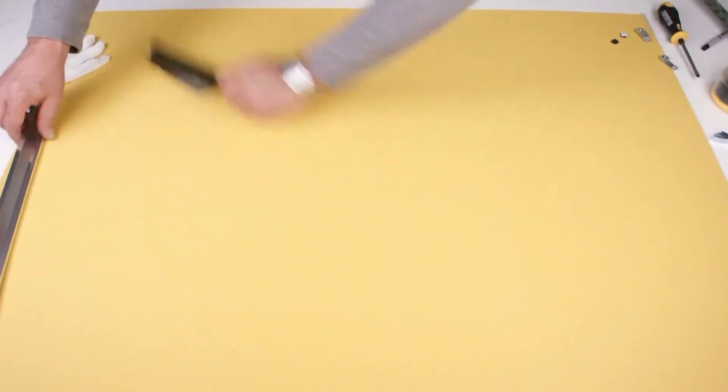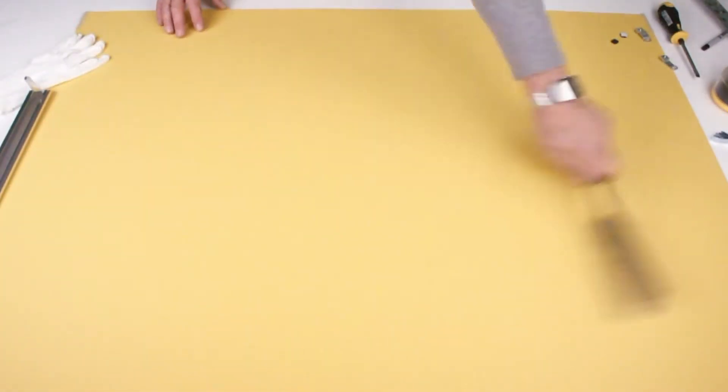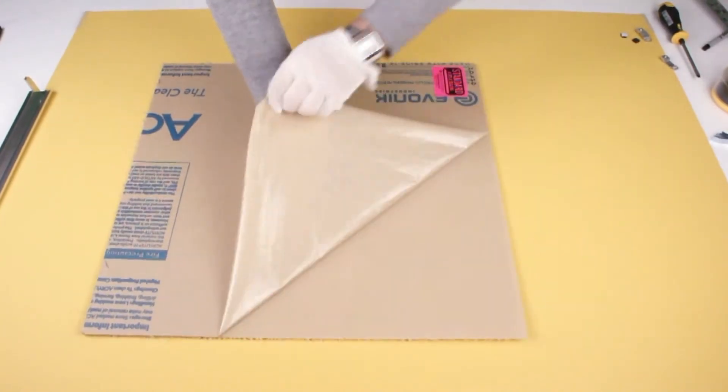Now with your anti-static artist brush in hand, clean your work surface thoroughly. With your protective gloves on, proceed to peel off the protective paper from your Plexiglas.